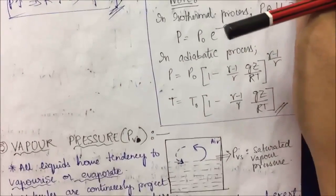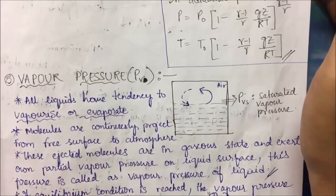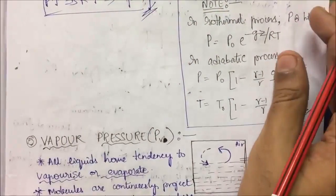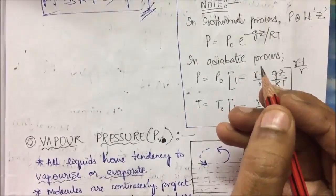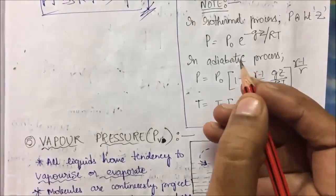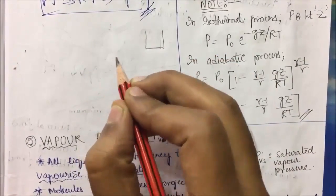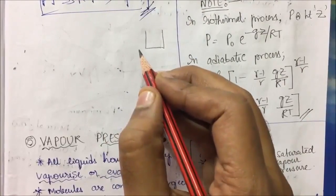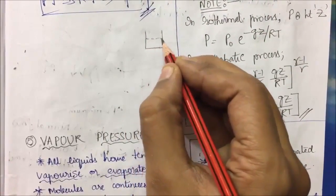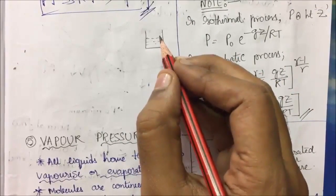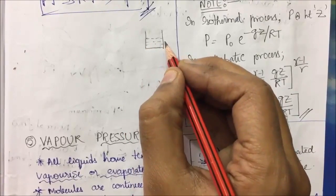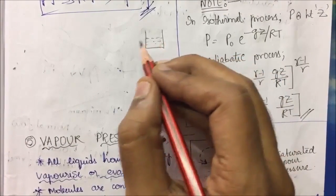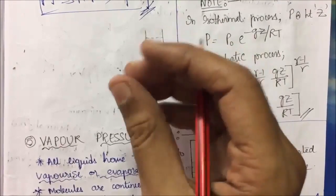In the last module we covered bulk modulus. In this module we start from vapor pressure. All liquids have the tendency to vaporize and evaporate. We don't need 100 degrees centigrade to evaporate any fluid — that is only a myth. Take a glass of water, keep it on a table, and after a week the liquid level will have fallen. In Indian homes, floors cleaned with water dry within minutes.